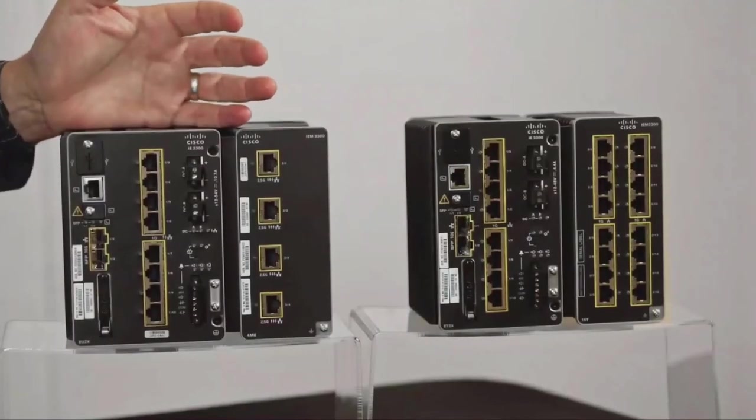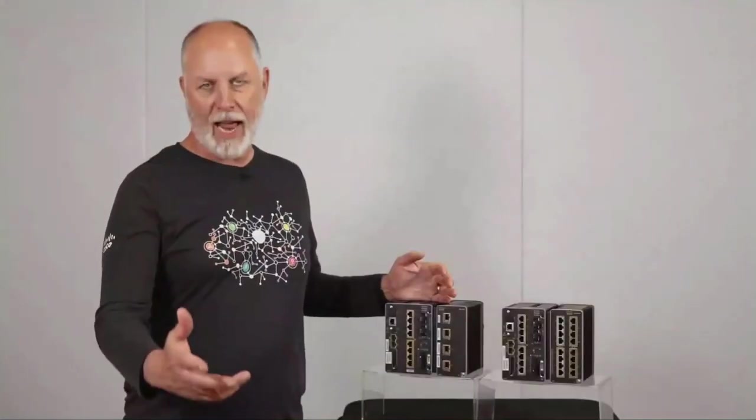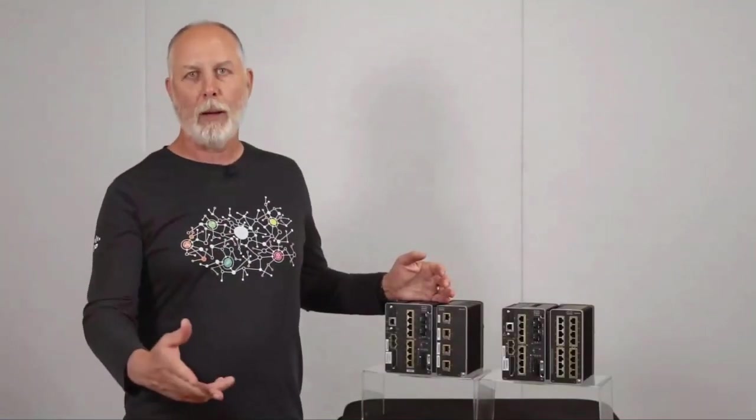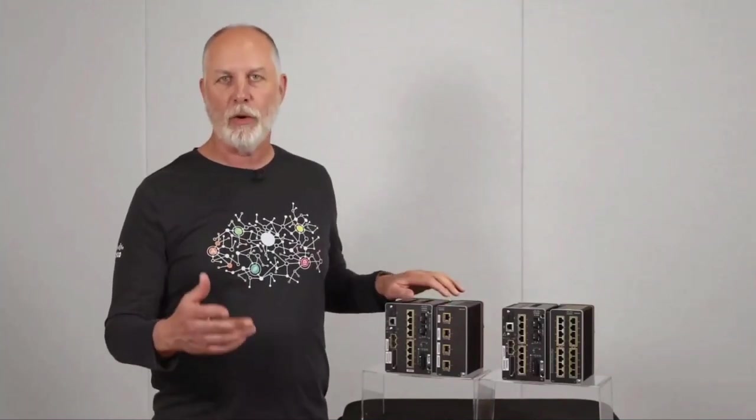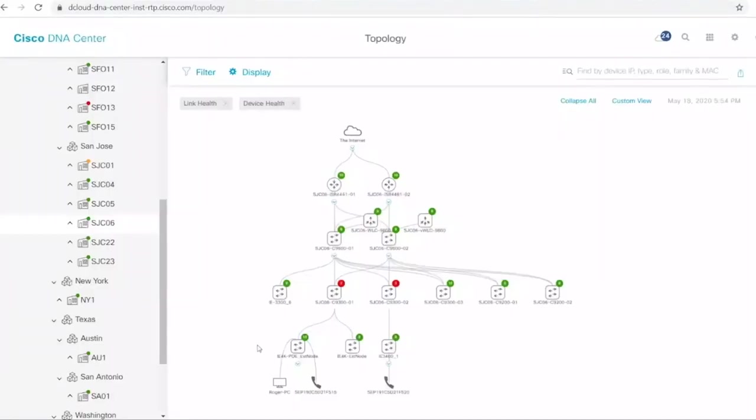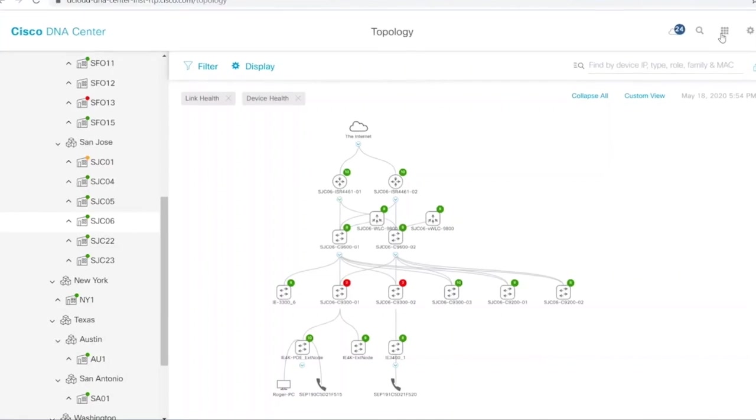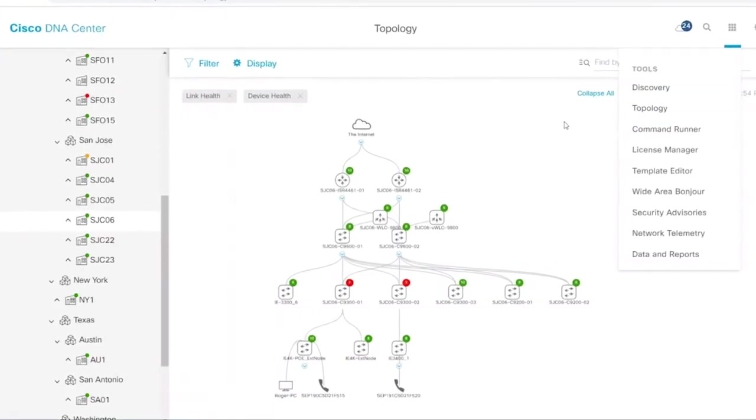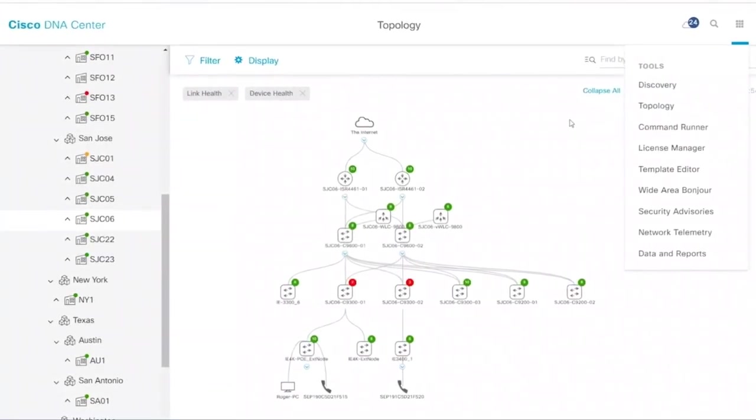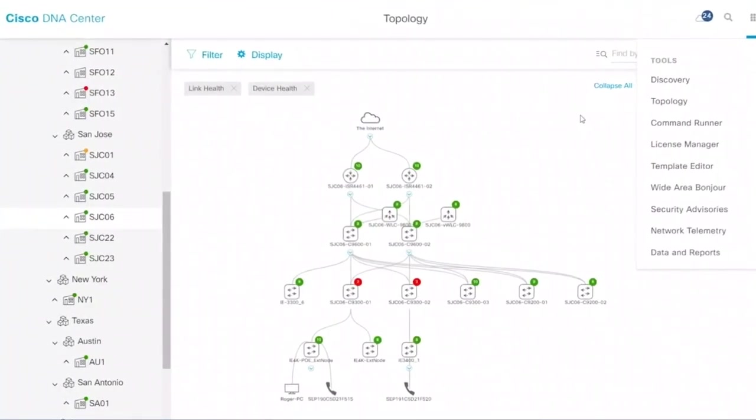These products are also running iOS XE, the new operating system. They're a catalyst. So all of your operational tools, management procedures that you're using for the existing catalyst products are going to work on these as well. So if you're using DNAC, DNAC supports these products in terms of general management. At a DNAC essentials level, you'll get software image management, inventory, topology, PNP, all the basic stuff.